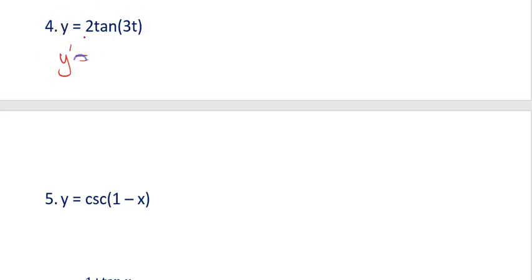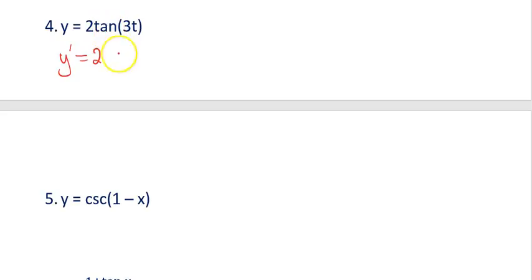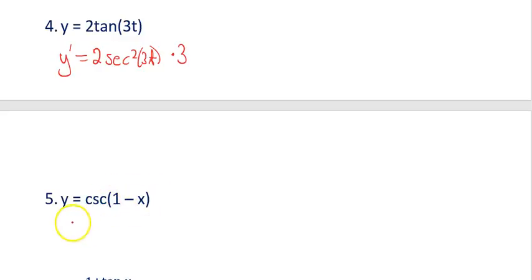For example 4, that 2 in front is just a number with no x, so it's not a product rule — bring it down. Then do the derivative of tangent: the derivative of tangent is secant squared. Don't touch the 3t yet — just change tangent to secant squared and keep 3t inside. The last step is the derivative of 3t, which is 3.